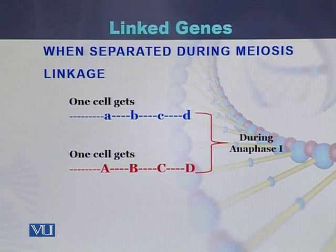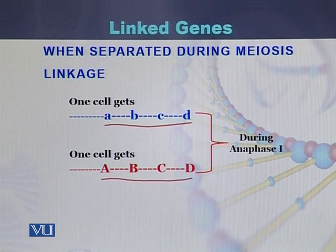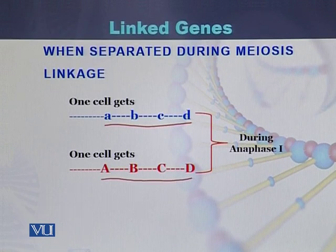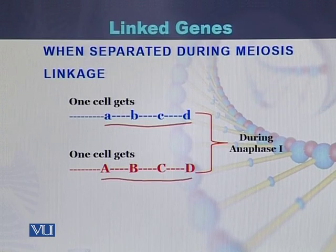So when they are separated during the process of meiosis, what is the meaning of linkage? During anaphase of meiosis, one set receives the A, B, C, D copy of chromosome 15, while the second set also receives A, B, C, D. It means there is no crossover between these genes. Here A can be considered gene 1, B gene 2, C gene 3, and D gene 4. If the sequence is the same as was present on the chromosome in the parents — if it is not changed and remains A, B, C, D — then we will say that the genes are linked together, there is no crossover. Such genes are called linked genes.